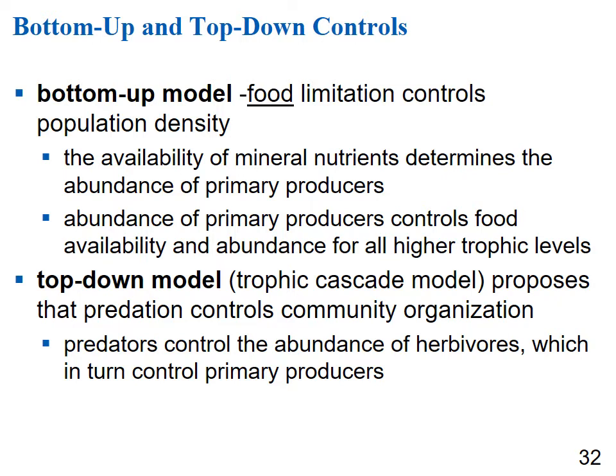Two models describe what controls population densities in communities. The bottom-up model says food limitation controls population density: mineral nutrients determine primary producer abundance, which determines herbivore abundance, which determines carnivore abundance. The top-down model, also called the trophic cascade model, says predators control herbivores and herbivores control plants. Neither model is correct 100% of the time — figuring out what's actually happening in a particular ecosystem can be challenging.